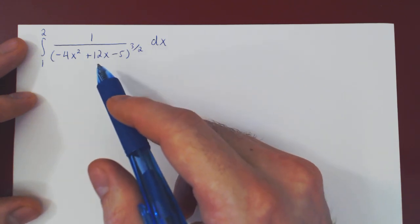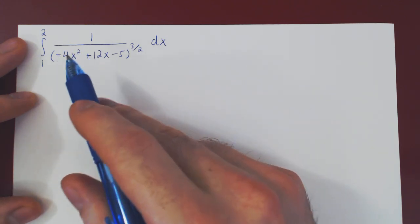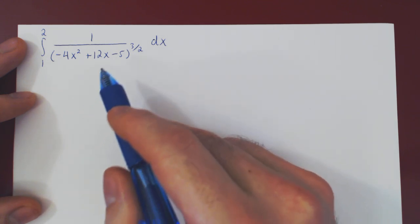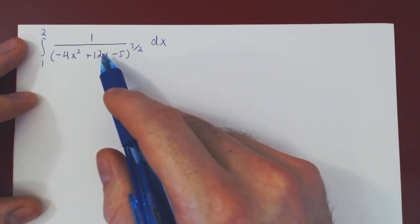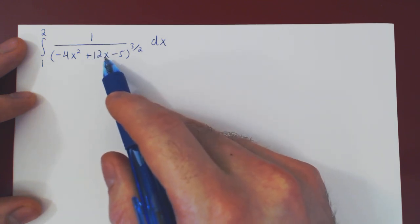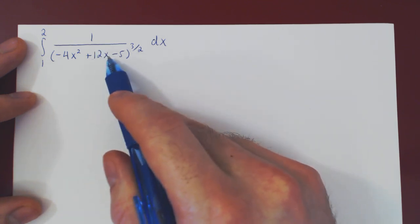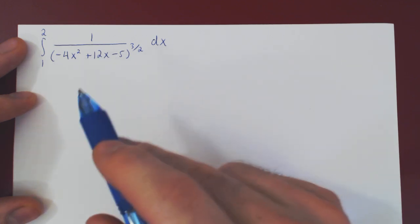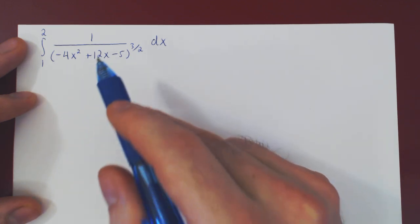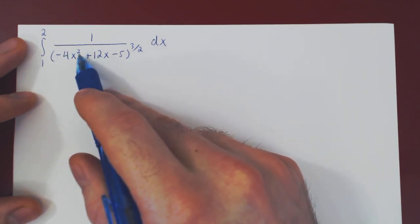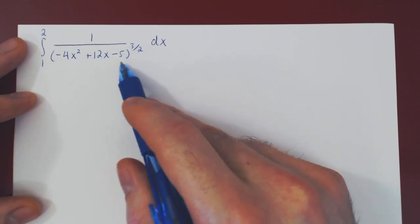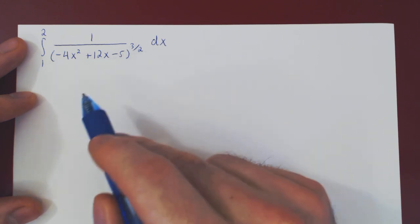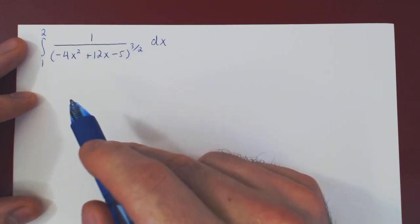The main difference between this problem and the previous two examples is the presence of a multiple of x — a linear term in our quadratic polynomial. In the previous two examples, we had a quadratic term and a constant term, but no linear term, no multiple of x.